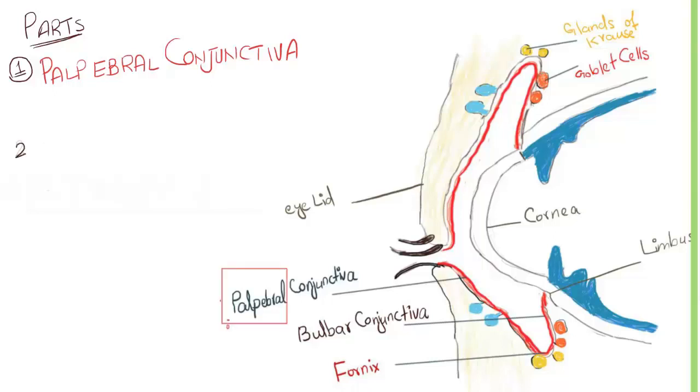Number two is the bulbar conjunctiva. It covers the anterior surface of the eyeball. It is loosely attached to underlying tissue but is firmly adherent to Tenon's capsule around the limbus.